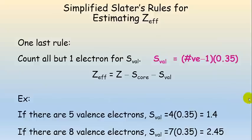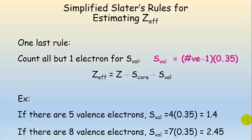We subtract one valence electron before calculating the valence screening, because we have to watch one electron and see how it feels the effective nuclear charge — all the other valence electrons screen that one we're watching. For instance, if there are five valence electrons, we count four of them and multiply by 0.35; if there are eight total, we count seven of them.